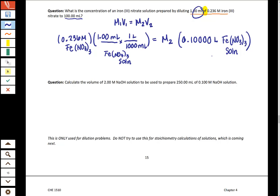And now we need to solve for M2. And when we solve for M2, what we're going to do is take these, multiply them, and then divide by the 0.1. And so what you should get for your M2 is 0.00236 moles per liter of iron 3 nitrate.